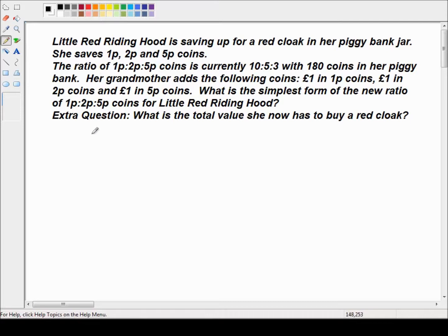So we're told Little Red Riding Hood is saving up for a red cloak in her piggy bank jar. She saves 1p, 2p and 5p coins. The ratio of 1p to 2p to 5p coins is currently 10 to 5 to 3, with 180 coins in her piggy bank.